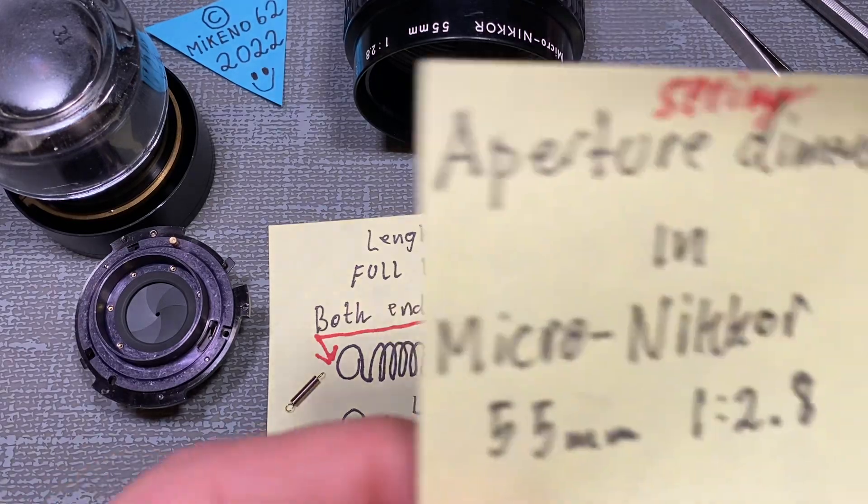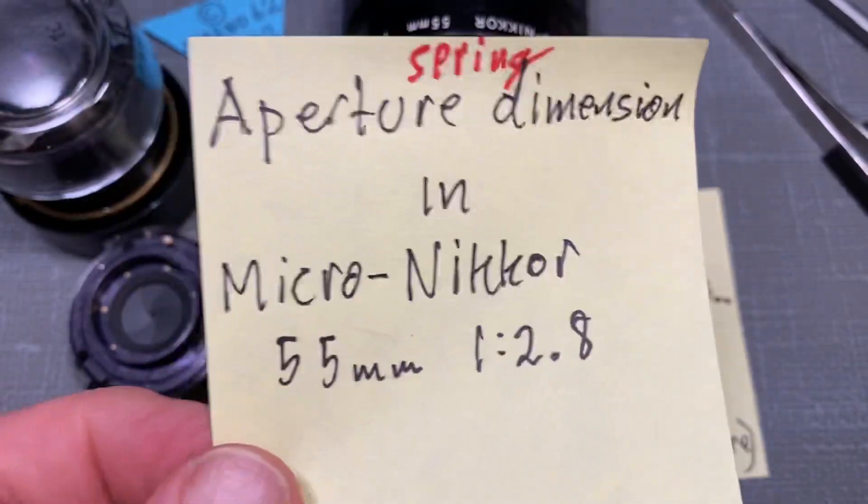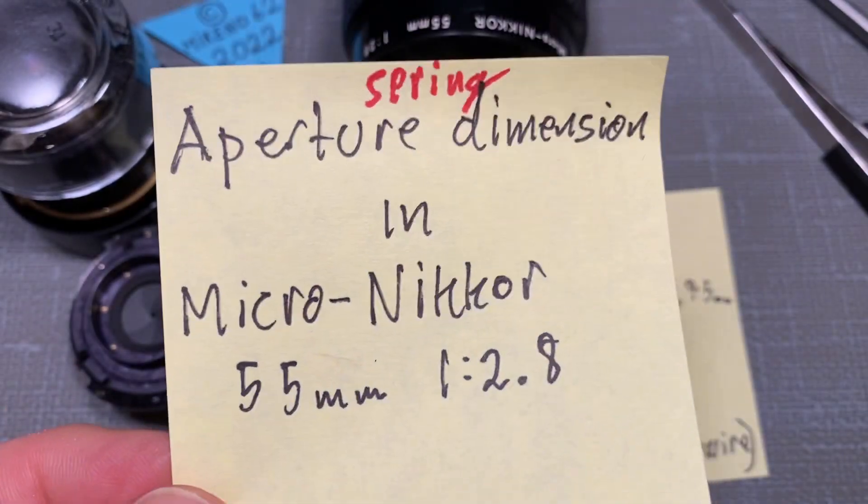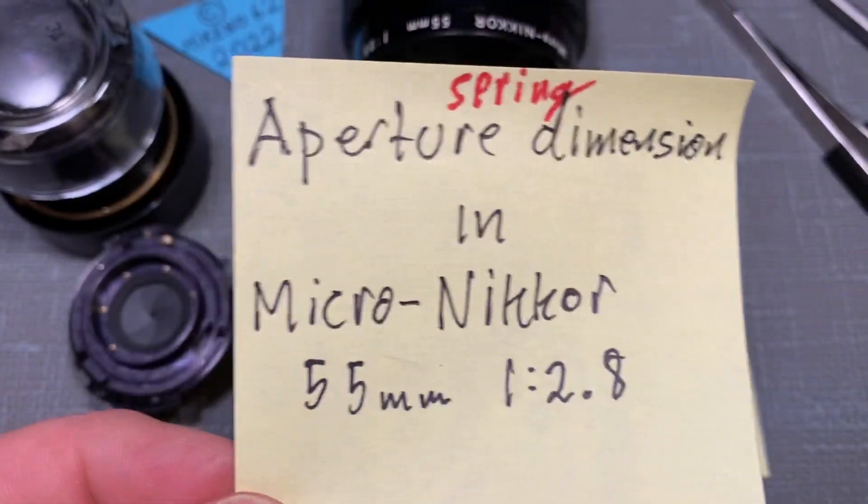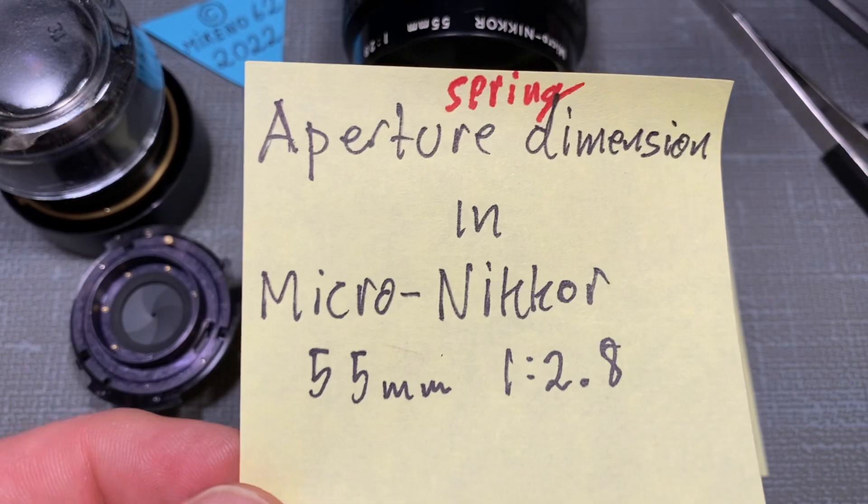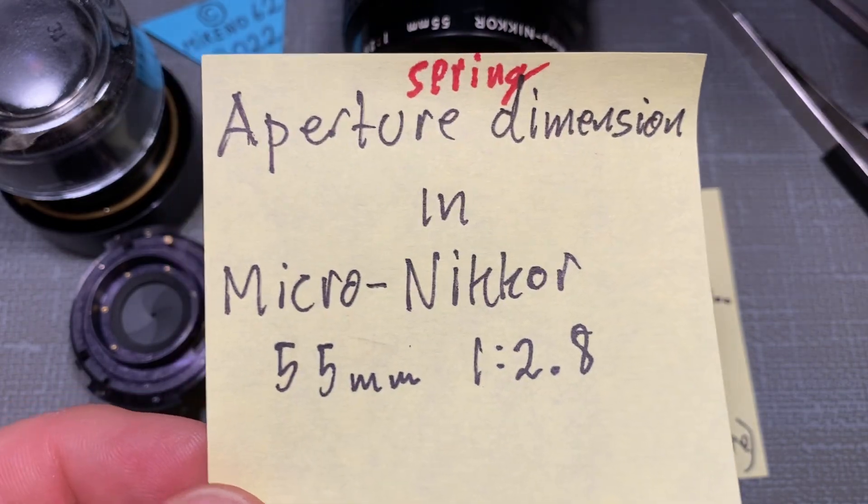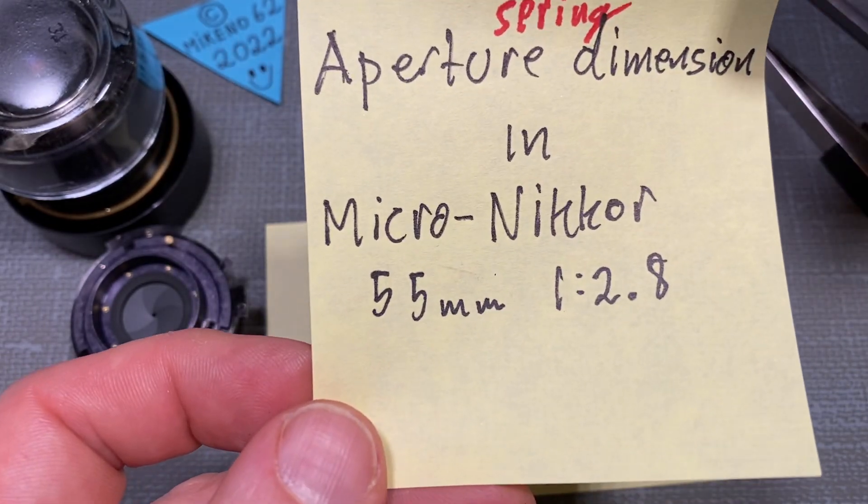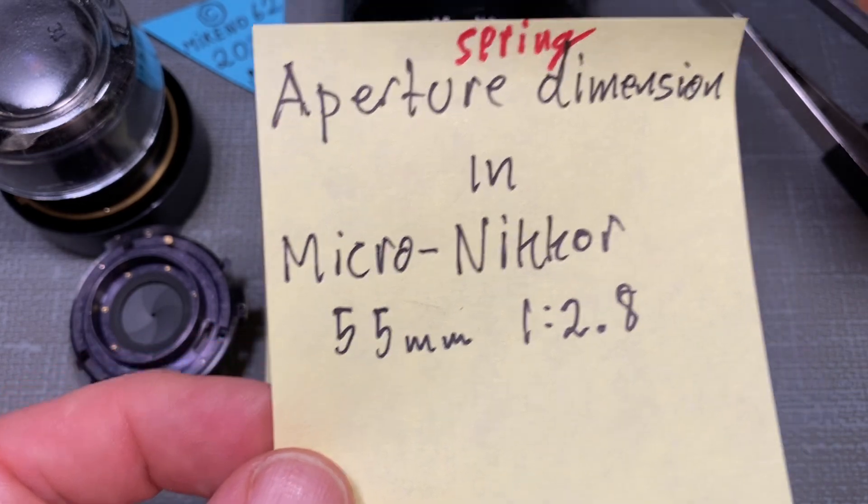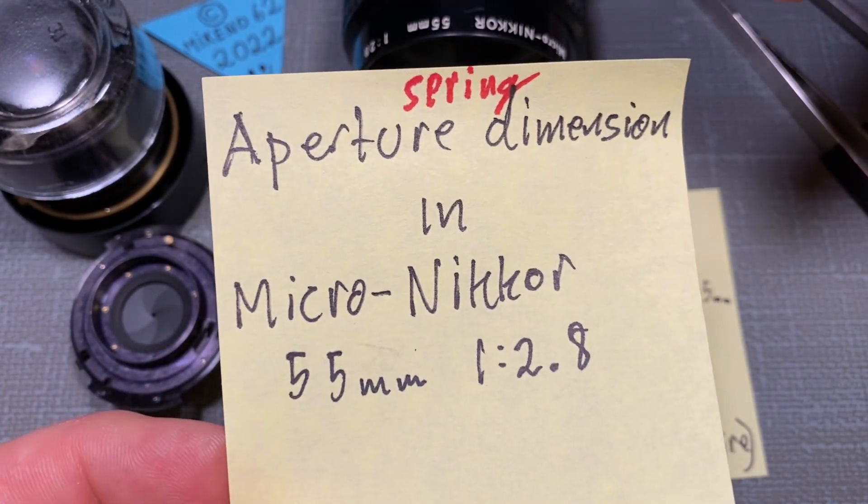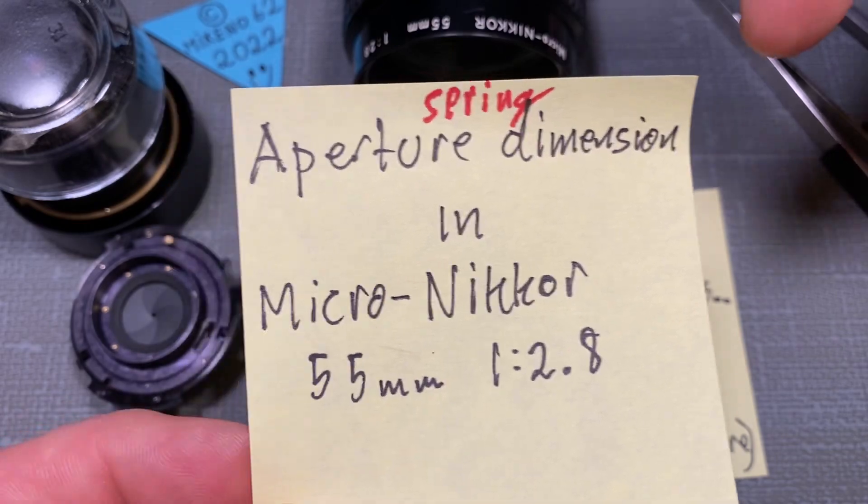Hello everybody and welcome to another tutorial in camera lens repair. This will be just a short info about the aperture spring in the Micro Nikkor 55 millimeter f/2.8 and what's actually the dimension of the aperture spring.